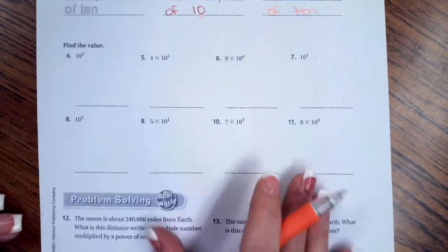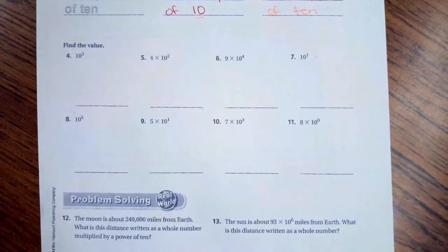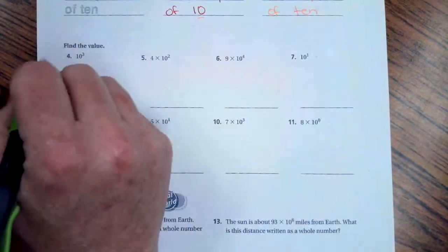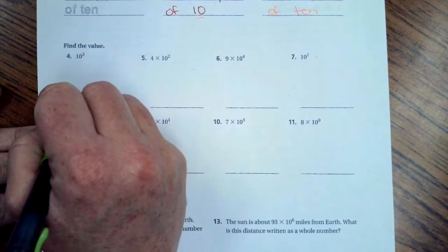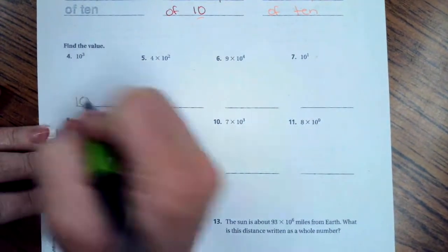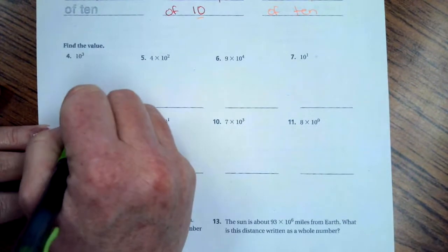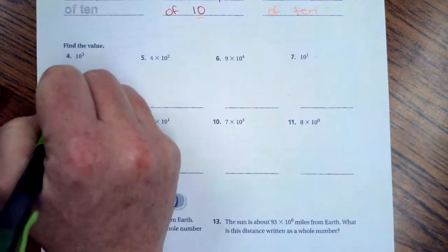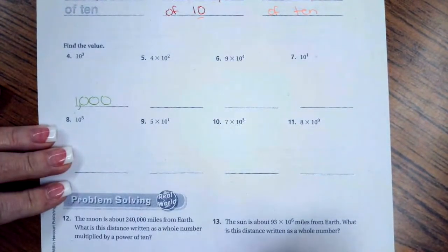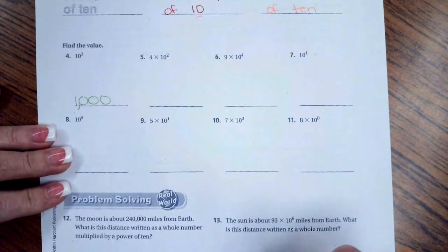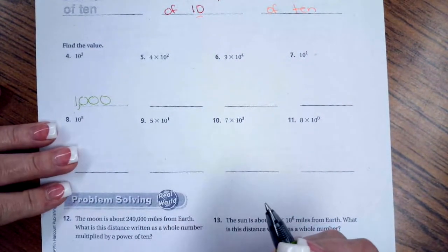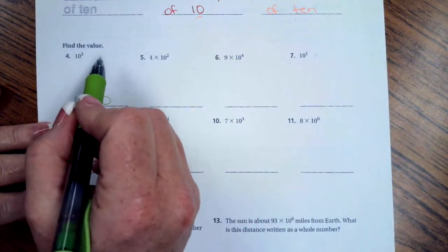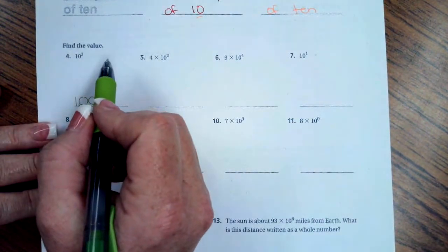You'll see on number four that we have ten to the power of three, so that means ten with a total of three zeros—that's a thousand. If you do the math out, it would be 10 × 10 × 10. Well, 10 × 10 is 100, times 10 again is 1,000. It matches up.